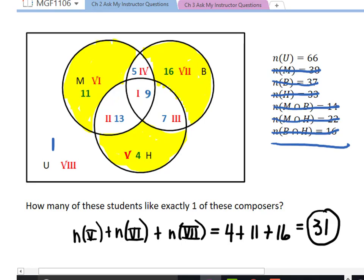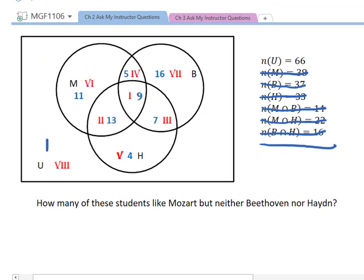Okay. And now one more question. How many of these students like Mozart, but neither Beethoven nor Haydn? Okay. So we're looking for the number that are in M and they are not in B, so they're in B complement, and they are not in H. This would be how you'd write that symbolically.